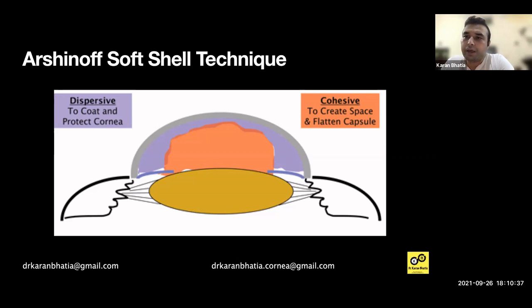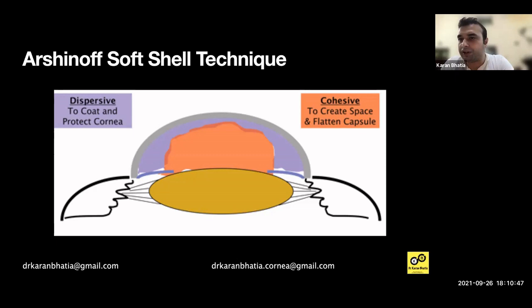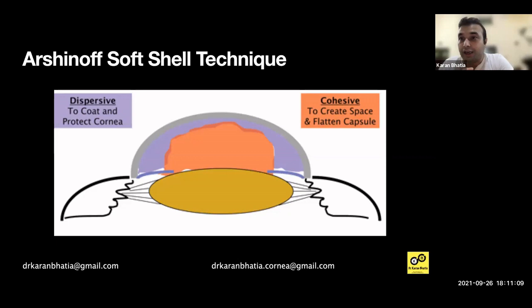If the patient can't afford both OVDs, a modification is to use a high molecular weight dispersive OVD like Viscoat and inject HPMC underneath — the soft-shell technique. This is extremely important because endothelium is the most important structure of the eye. Endothelial keratoplasty results are excellent nowadays with DSEK/DMEK, but you still don't want to damage the endothelium going forward.